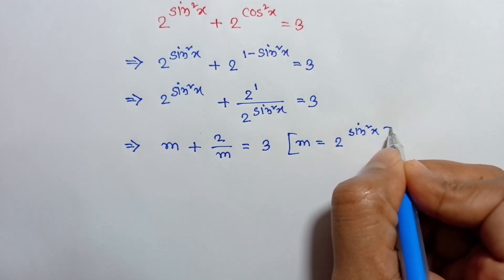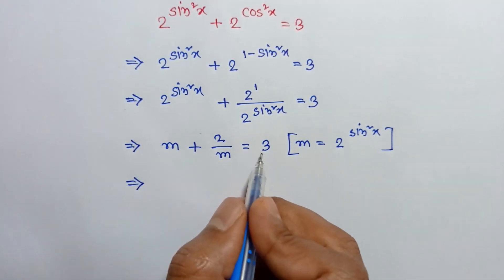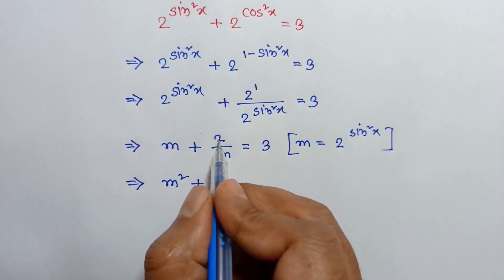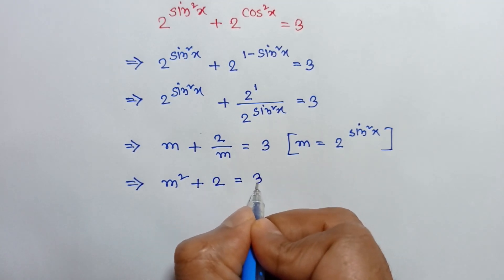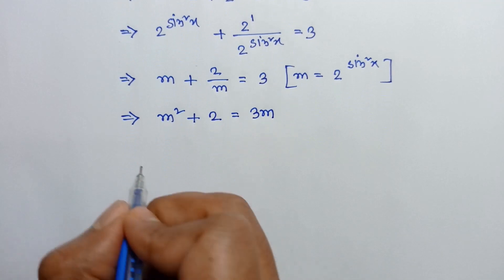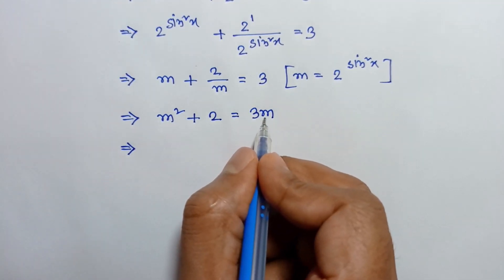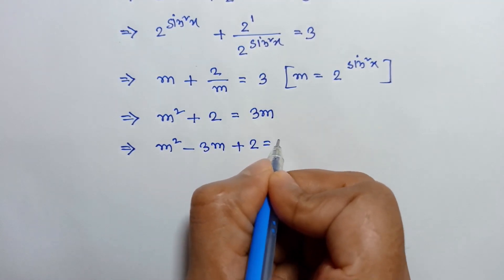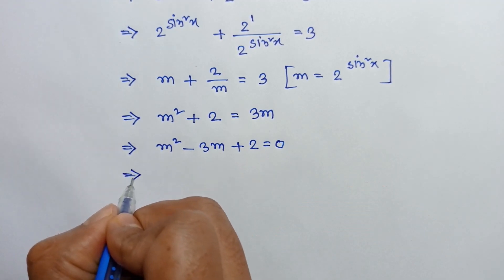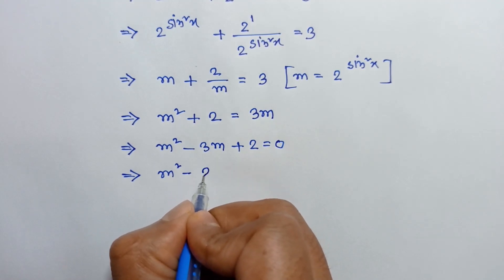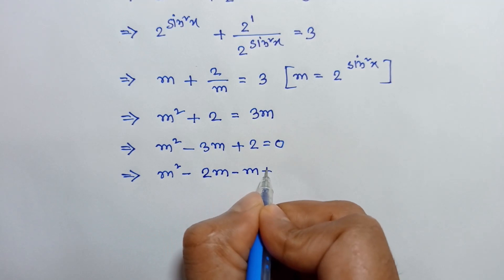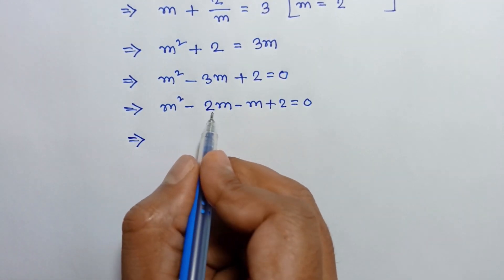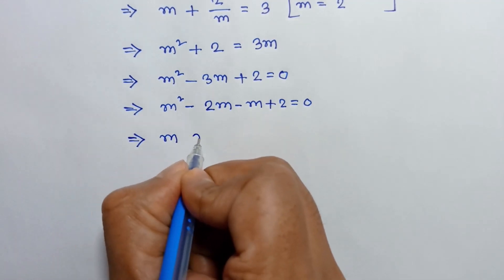If we multiply both sides by m, we can write m squared plus 2 is equal to 3m. Taking 3m to the left side, we can write m squared minus 3m plus 2 is equal to 0.